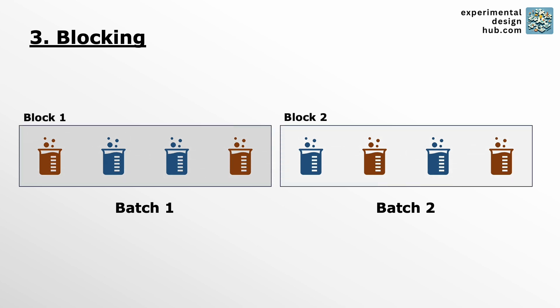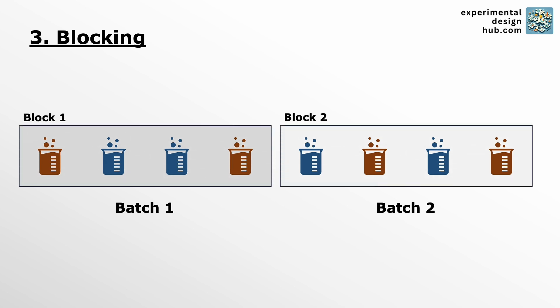The simplest form of blocking is to keep a certain variable constant, like for example the batch number. But not always is it that easy, and sometimes we also need to account for the block-to-block variability within our experimental design.